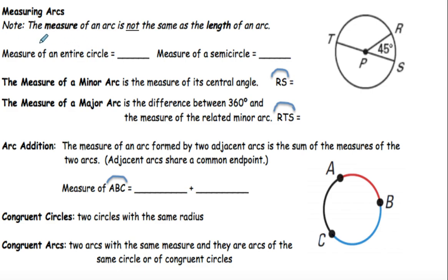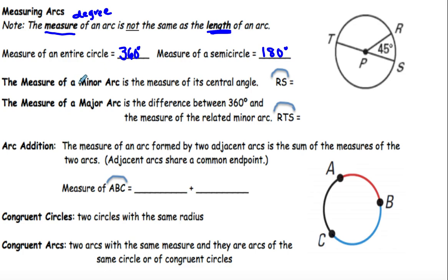The measure of the arc is not the same as the length of the arc. What we had been talking about is the length of the arc, which is kind of like the circumference times a fraction of the part. The measure is always going to be in degrees. The measure of an entire circle equals 360 degrees, and the measure of a semicircle is 180. The measure of a minor arc is the measure of its central angle. So if I look at arc RS, the measure of RS equals its central angle: 45 degrees.